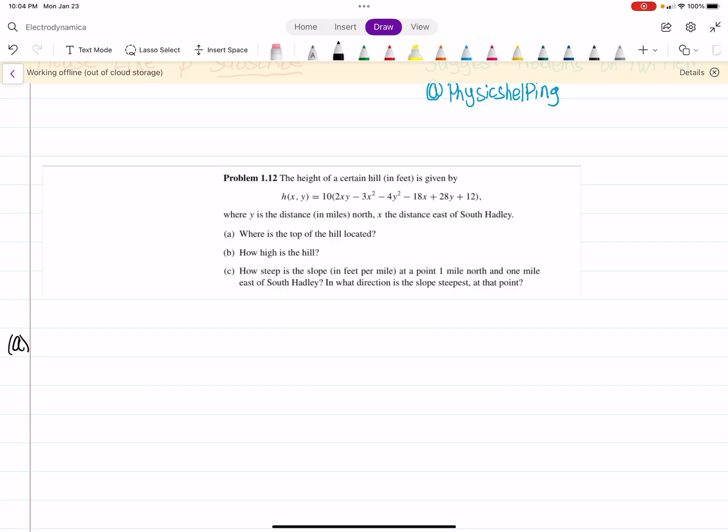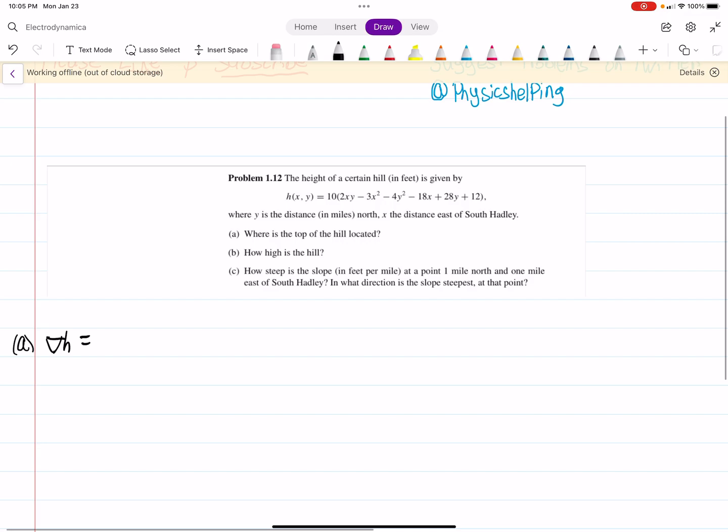We want to find where the top of the hill is, so we have to take the gradient, that is the derivative of h. So we have 10, that's just out front, 2y, because we're taking the derivative with respect to x, minus 6x minus 18, the rest are 0.